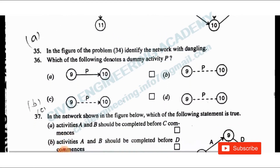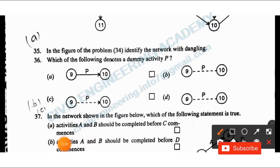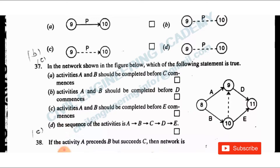Next question: Which of the following denotes a dummy activity? Option A shows a simple arrow. Option B has no arrow shown. Option C shows node 9 to 10 with the same numbering but the arrow is not shown. Option C is the right answer for a dummy activity.